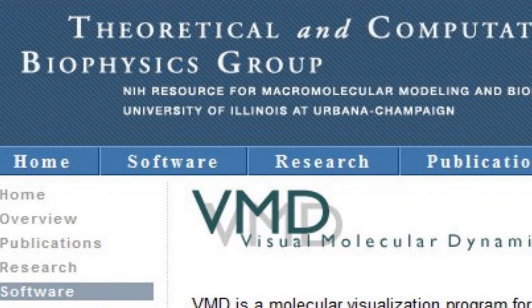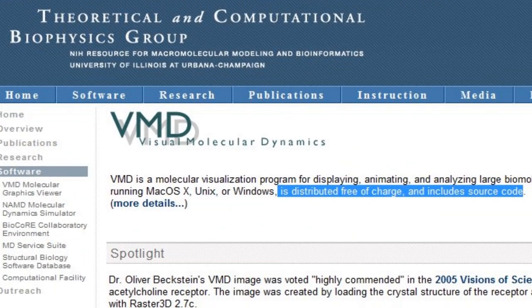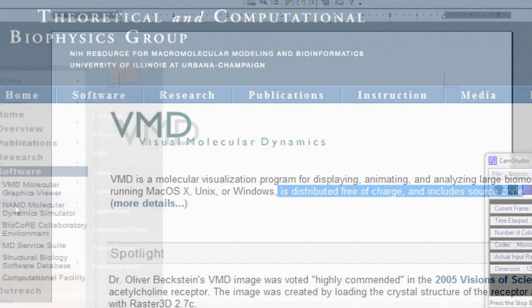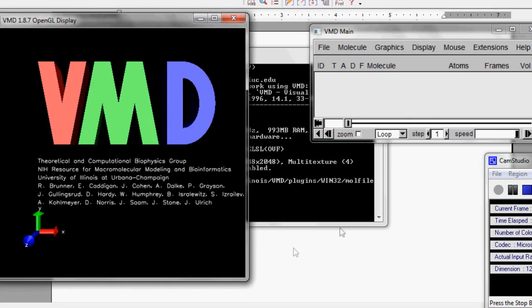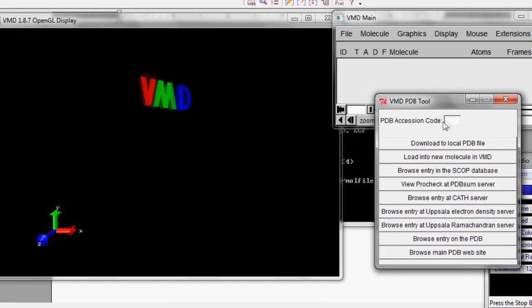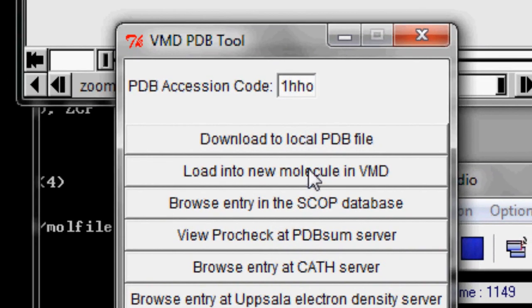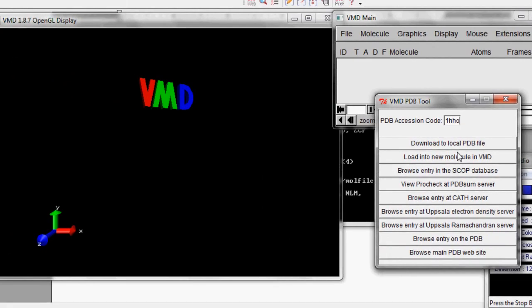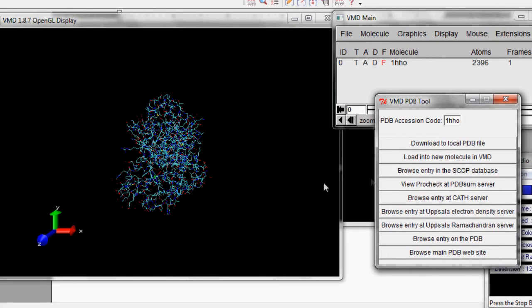So go to the website below and download the software VMD. You'll have to sign up to do this. Start VMD and go to Extensions, Data, PDB Database Query and type in the accession code 1-H-H-O, and then click on Load into New Molecule in VMD. Boom. There you go.